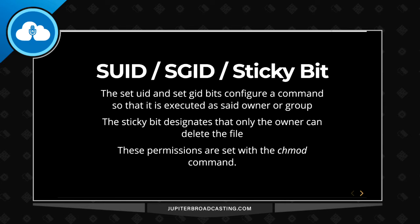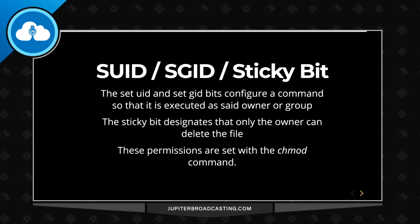The set UID bit means that when an application or a script is run, it's going to be run as the owner of the file, as opposed to running as the user that executed it. One common use of this is the passwd command — it's very powerful and allows us to change a user's password. Every user should be able to change their own password, so when a non-privileged user wants to change a password, they execute the passwd command, but the system executes it as root, allowing it to update the shadow file and all the required pieces.